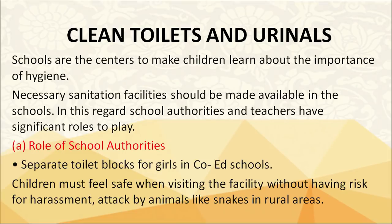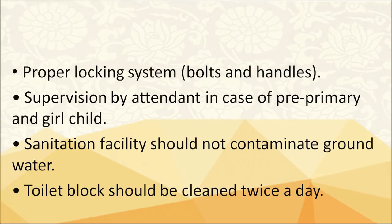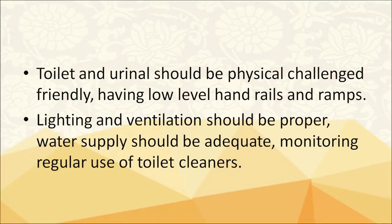The role of school authorities includes: separate toilet blocks for girls in co-ed schools; children must feel safe when visiting the facility without risk of harassment or attack by animals like snakes in rural areas. There should be a proper locking system with bolts and handles, supervision by attendants for pre-primary girl children, and sanitation facilities should not contaminate ground water. Toilet blocks should be cleaned twice a day and should be physically challenge-friendly with low-level handrails and ramps. Lighting, ventilation, and adequate water supply should be ensured, and regular use of toilet cleaners should be monitored.